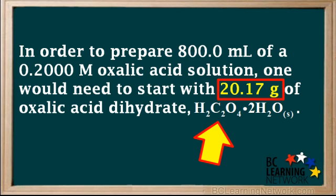So now we can state the final answer. In order to prepare 800 milliliters of 0.2 molar oxalic acid solution, one would need to start with 20.17 grams of oxalic acid dihydrate, H2C2O4·2H2O.